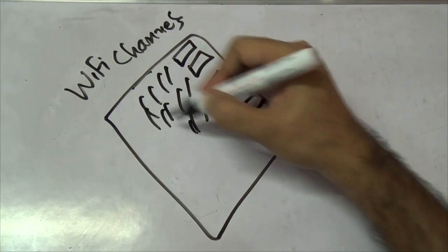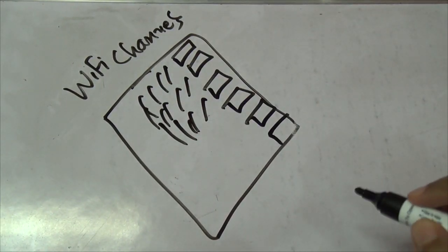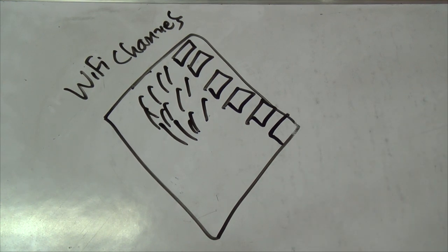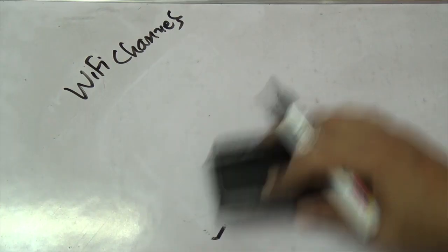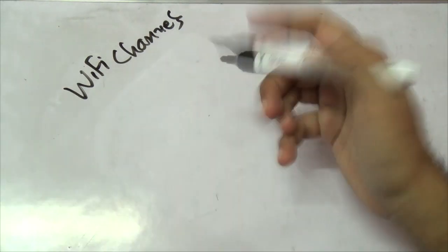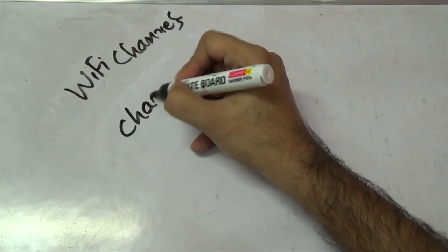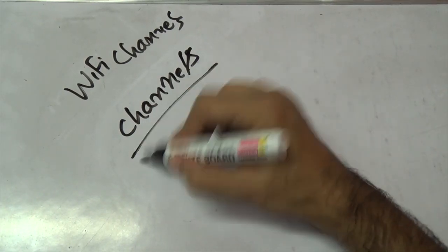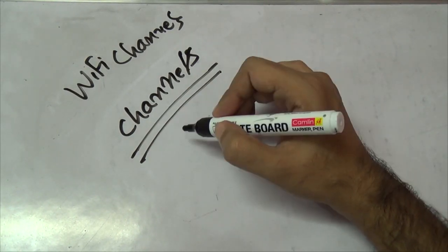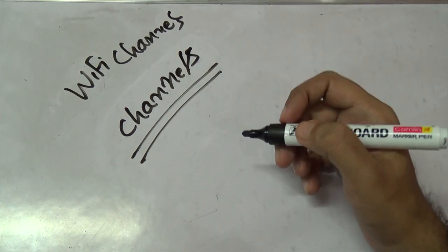They all emit radio waves and they clash with each other, and hence the range that you might get will be a little bit less. But you can fix this by changing the channels. You need to go to your router's admin page and most of them do support changing the channels.